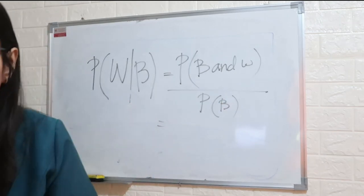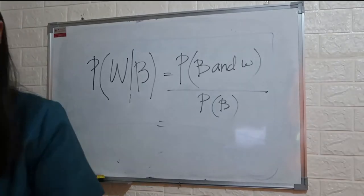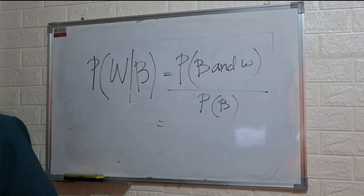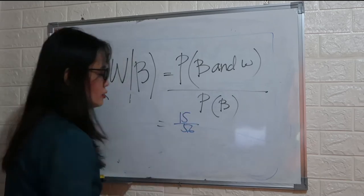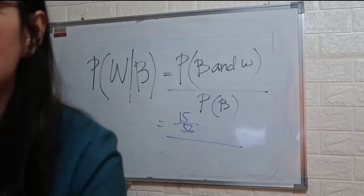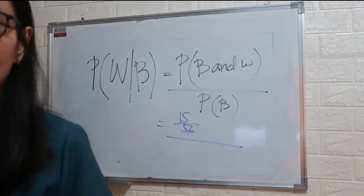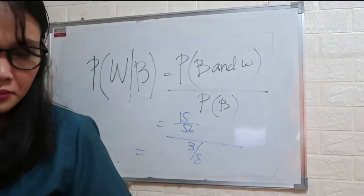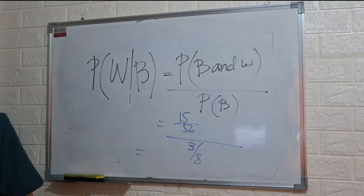Based on the problem, the probability of black and white is 15 over 56. The probability that it is a black chip, based on the problem, is 3/8. So therefore, 15 over 56 all over 3/8.